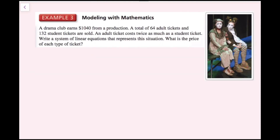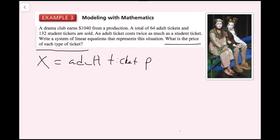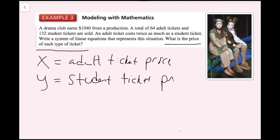For example 3, a drama club earns $1,040 from a production. A total of 64 adult tickets and 132 student tickets are sold. An adult ticket costs twice as much as a student ticket. We need to write a system of linear equations representing this situation and find the price of each type of ticket. First, figure out what you're solving for: the price of each type of ticket. I'll call x the adult ticket price and y the student ticket price.